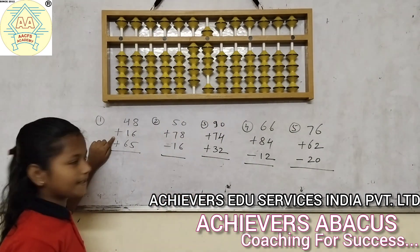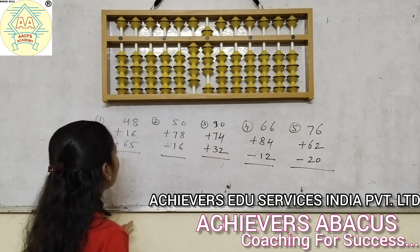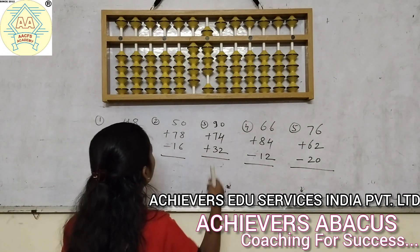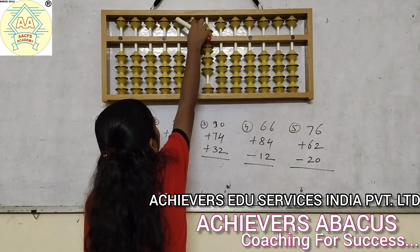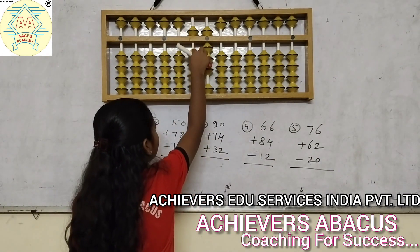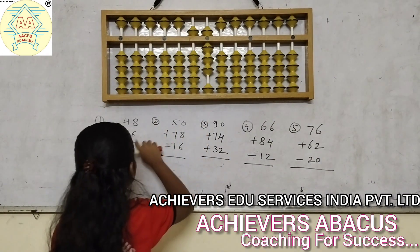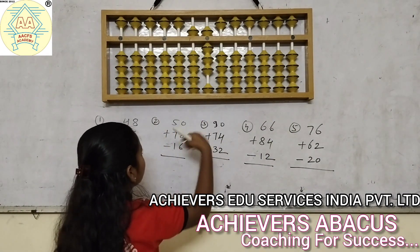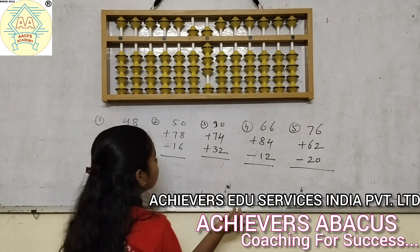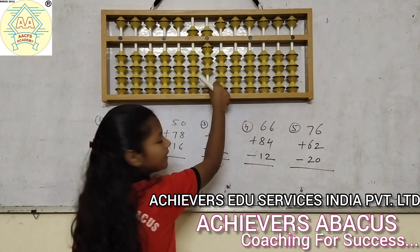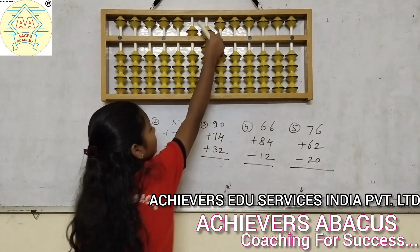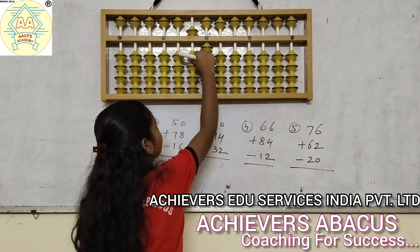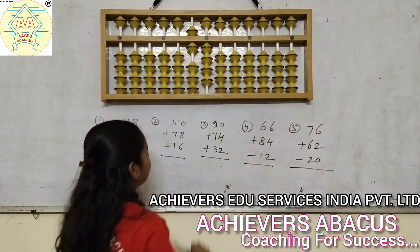Now we will do add 16. What is the formula of 1? Add 5. And then add 6. What is the formula of 6? Add 6 is: add 1, less 5, and add 10.